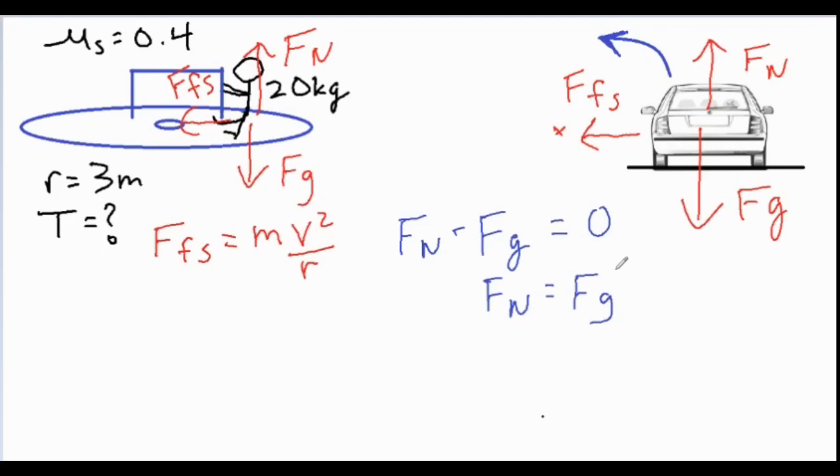So basically FN equals Fg because there is no acceleration or motion in the vertical direction, so we know that it equals 0. Therefore, if you add Fg to both sides, then FN equals Fg.